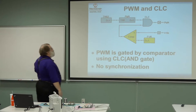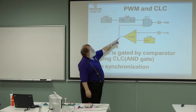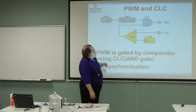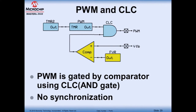Using a CLC for PWM control is straightforward: AND the PWM output with the comparator output — when the comparator is high, the PWM is passed through; when low, it's blocked. However, there is no synchronization, meaning partial pulses can appear at the output as the comparator transitions mid-cycle. For designers who find that problematic, there is another option: the Data Signal Modulator.